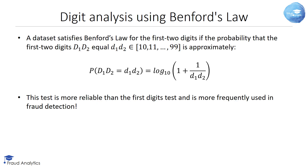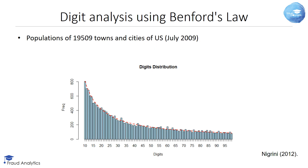Benford's Law has also been extended to the first two digits. A dataset satisfies Benford's Law for the first two digits if the probability that the first two digits D1, D2 equals d1, d2, belonging to the interval 10 to 99, is approximately: P(D1, D2 = d1, d2) = log base 10 of (1 + 1 divided by (d1 × 10 + d2)). This test is considered more reliable than the first digits test and is more frequently used in fraud detection. Here you can see an example: this data contains the populations of 19,509 towns and cities of the US, and the distribution of the first two digits nicely corresponds to Benford's Law.